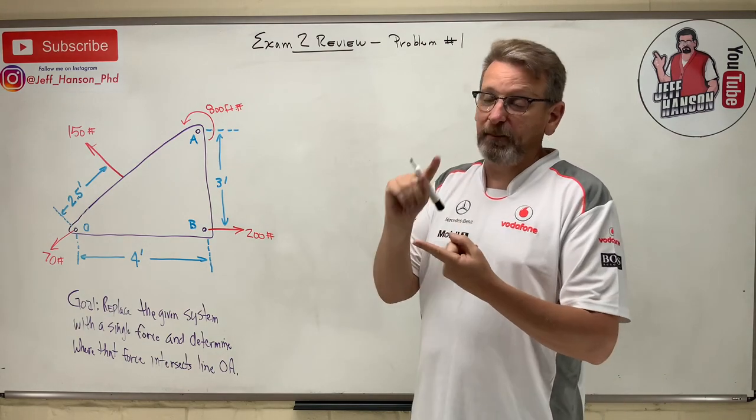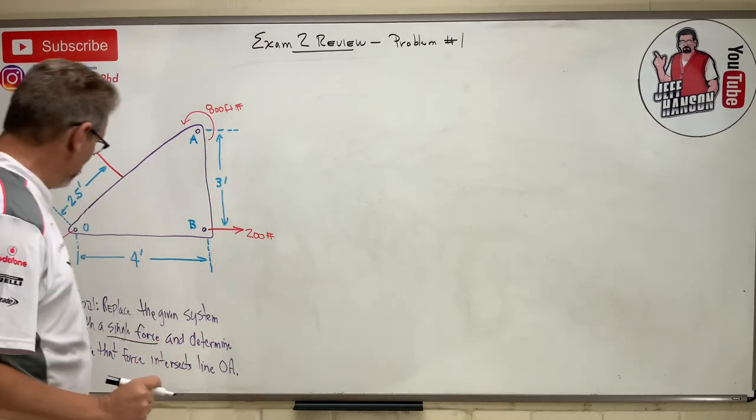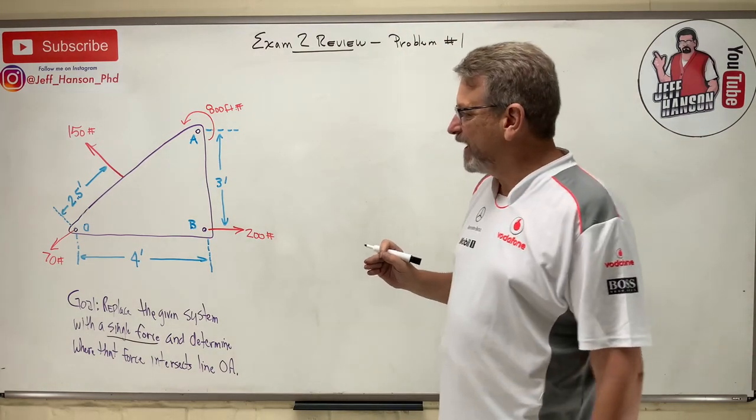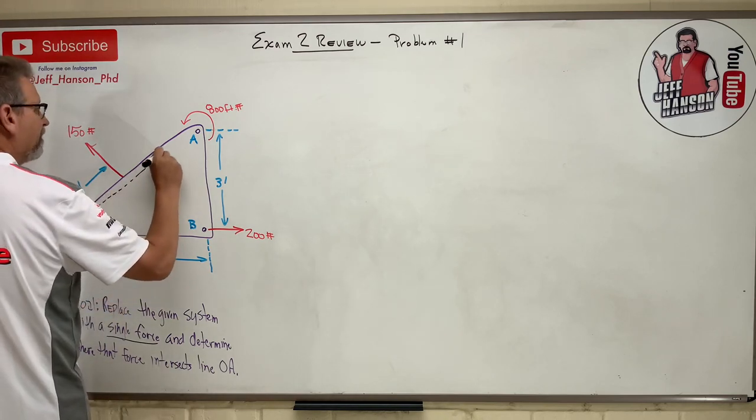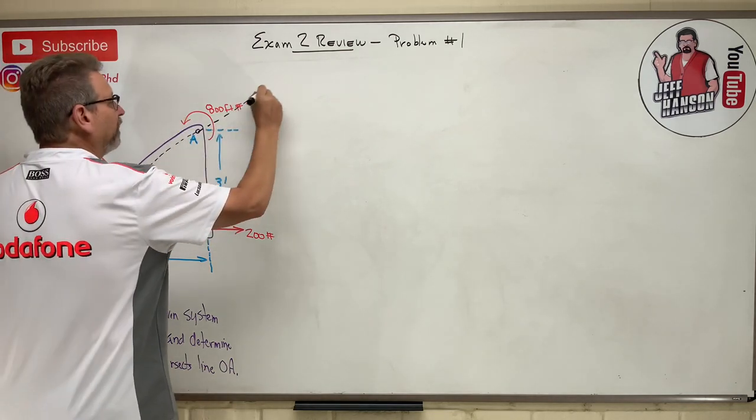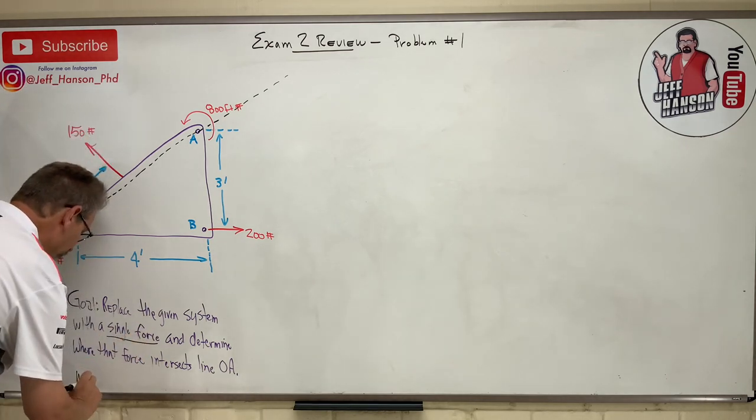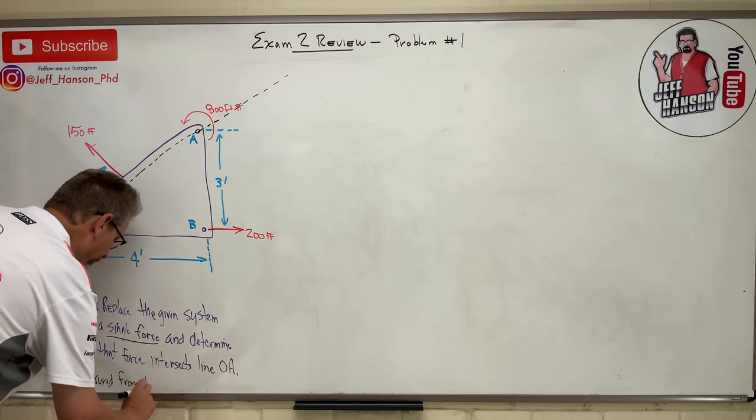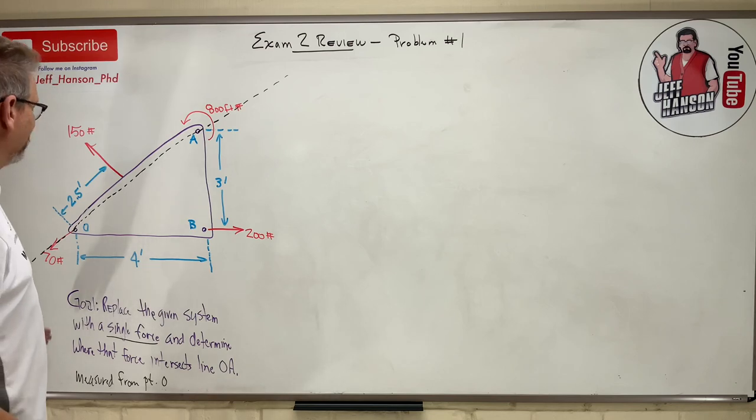They ask me for a force couple or a single force - this one is a single force. And determine where that line of action of that single force intersects line OA. Remember for these kinds of problems, line OA goes on forever in both directions. Let's say measured from point O, where does it intersect along that line?